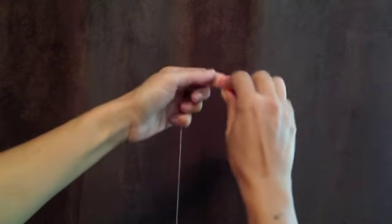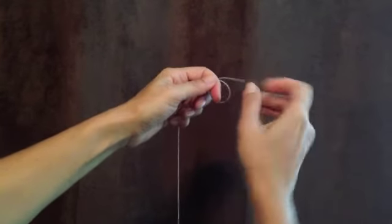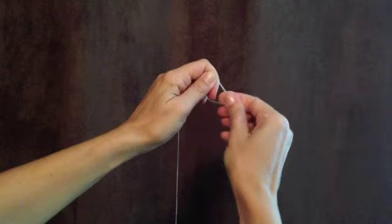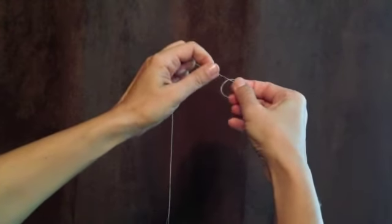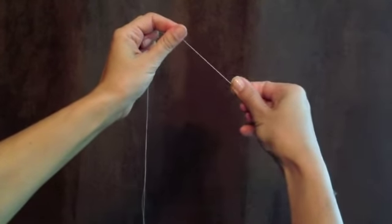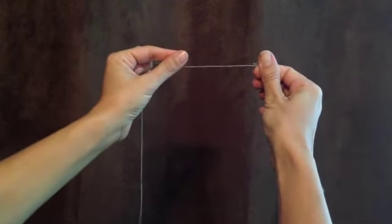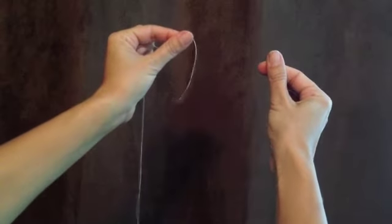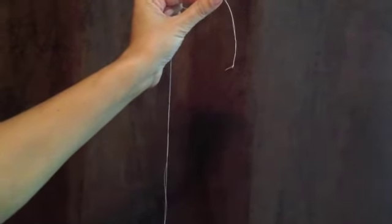You're going to wrap it around your finger through the hole like this and pull to a knot. Don't pull too tight because you want it a little loose so that it doesn't pull through your fabric.